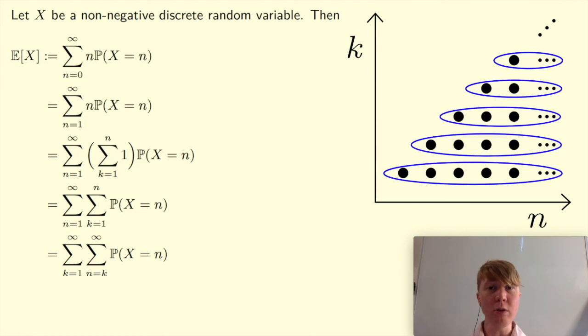And this is nice, because now all you need to do to finish off is just observe the sum from n equals k to infinity of the probability X equals n. So this is just the probability X equals k plus the probability X is k plus 1 plus the probability X is k plus 2, and so on. And that is just the same as having the probability that X is greater than or equal to k.